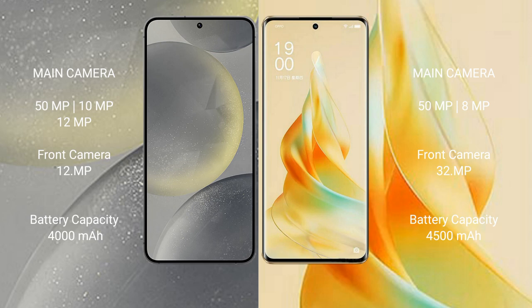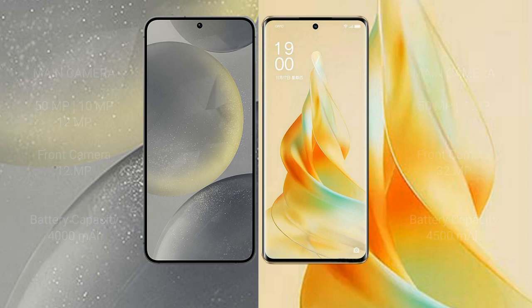Samsung Galaxy S24 has a 4000mAh battery with 25W fast charging support. OPPO Reno 9 Pro has a 4500mAh battery with 67W fast charging support.